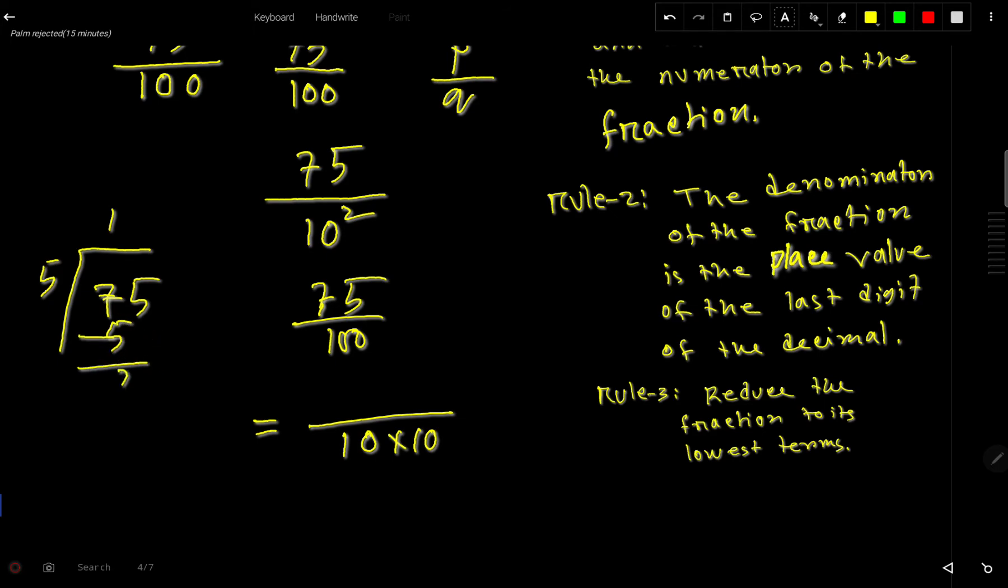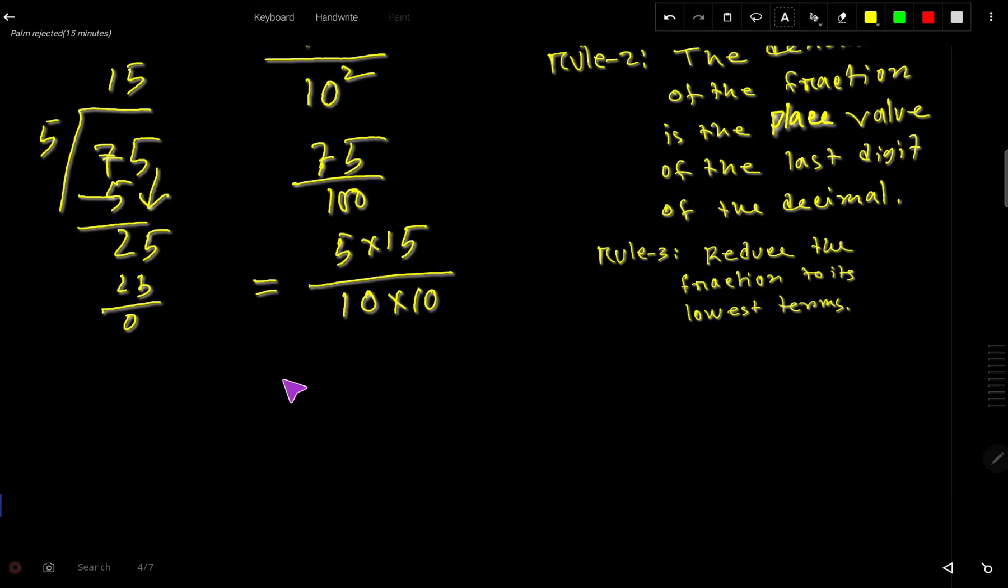So 5 times 15 equals 75. We can split this 10 as 5 times 2. This 5 and this 5 cancel each other, so we are getting 15 over 2 times 10.